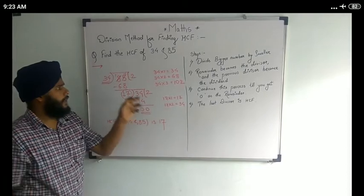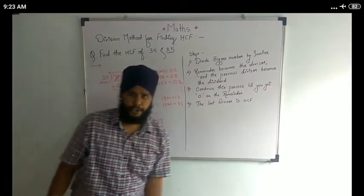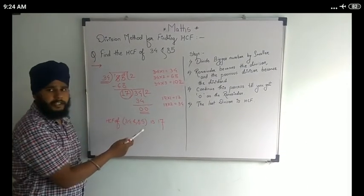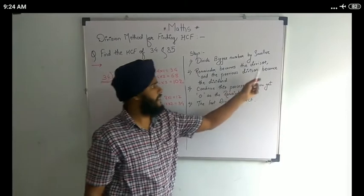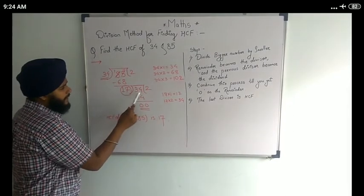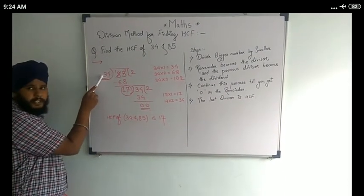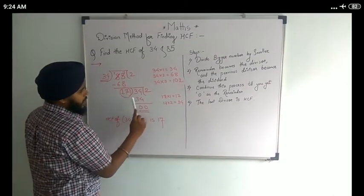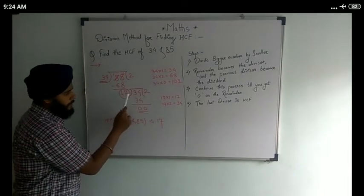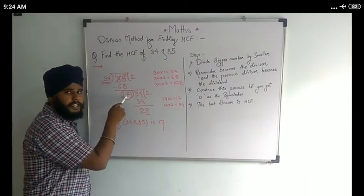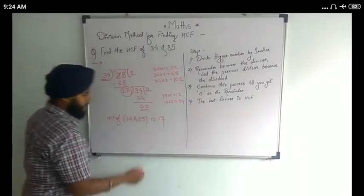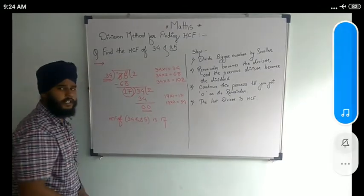What have we done? We divided the bigger number by the smaller number. The remainder was 17. Again, we repeated the process: the remainder becomes the divisor and the previous divisor becomes the dividend. We divided again and it was completely divisible, giving remainder 0. When we got remainder 0, the last divisor was 17, so the HCF is 17.